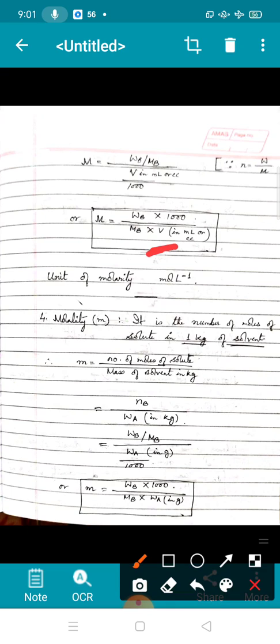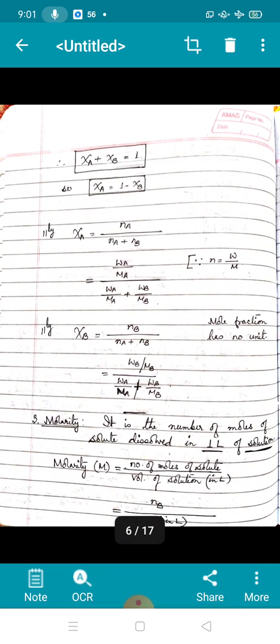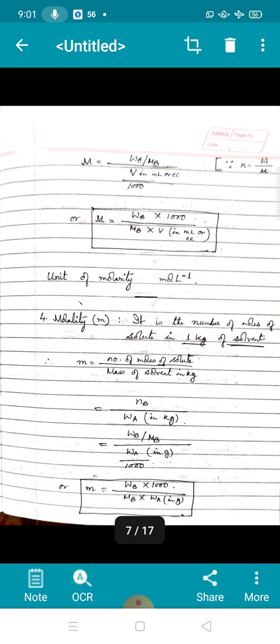Then comes molality, and molality is represented by the symbol small m. It is the number of moles of solute in one kilogram of solvent. So in what way it is different from molarity? In molarity you may notice it is one liter of solution, and here it is one kilogram of solvent. So you need to be very, very careful in learning the definition of molality and molarity.